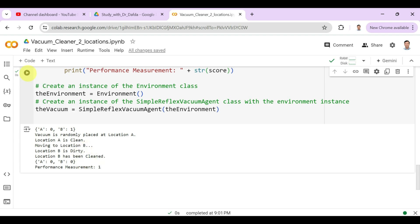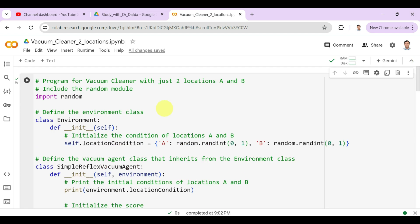Let us again run the program and see the output. So now location A is also dirty and B is also dirty, and vacuum is randomly placed at location A. A is dirty, location A has been cleaned, moving to location B and location B is also dirty. So location B has also been cleaned. So now A is 0, that is clean, and B is 0, that is clean, and the performance measure is 2 because it has cleaned 2 locations. So in this way, we can implement this vacuum cleaner with just 2 locations in Python.